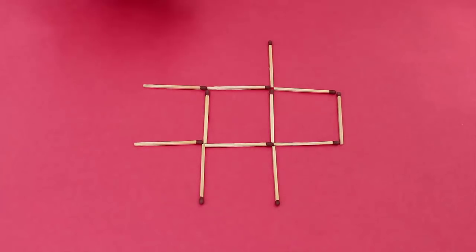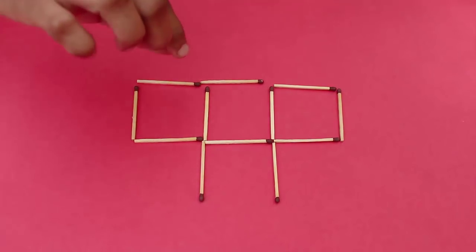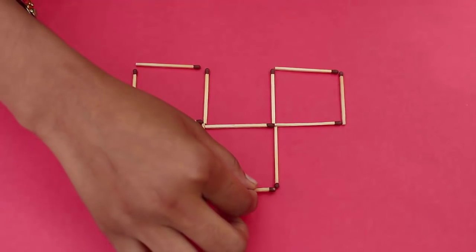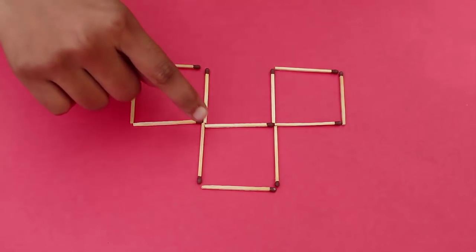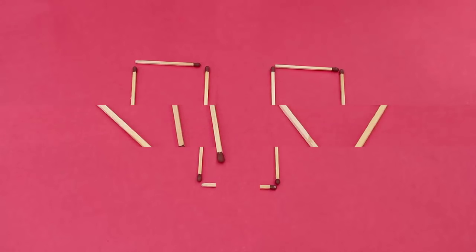It is quite easy. Right now you see only one square, but by moving just three matchsticks you can make three squares instead of one.